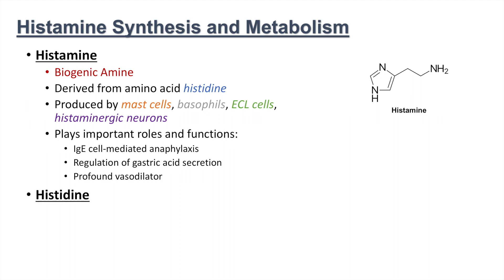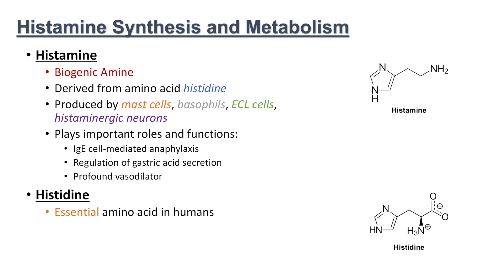Histidine is the amino acid from which histamine is produced. Histidine is itself an essential amino acid in humans, meaning that humans have to get this amino acid from our diet. It was previously thought that this was only essential in children, but now it's been found that it's also essential in adults. Some dietary sources of histidine include meats, soy products, nuts, and seeds. The main important point is that histidine is required from our diet.